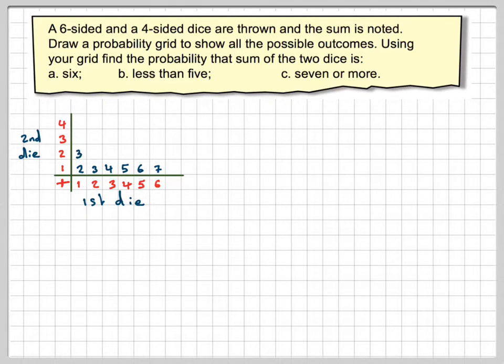That process is now continued. One plus two is three. Two plus two is four. Three plus two is five. Four plus two is six. Five plus two is seven. And six plus two is eight.